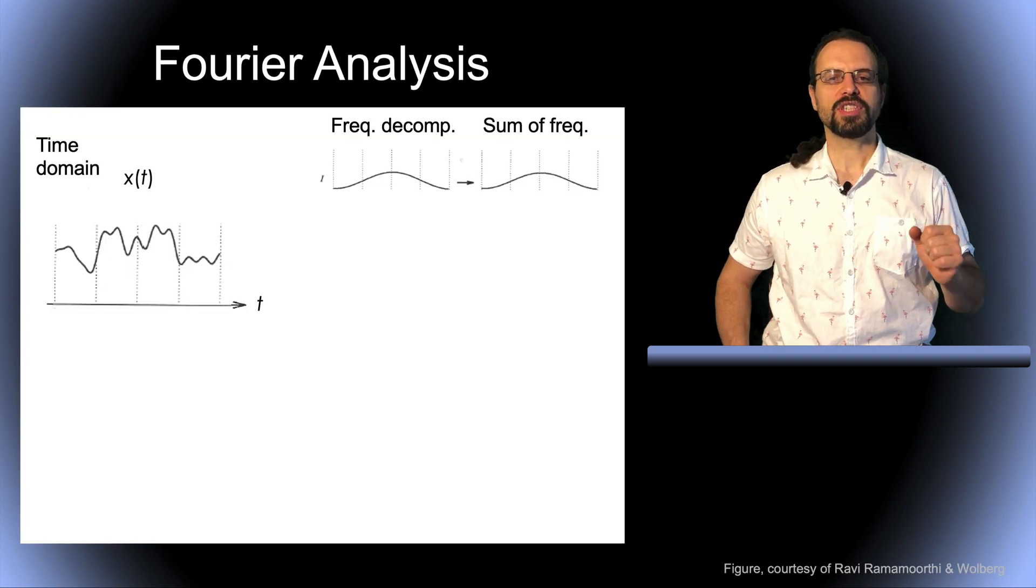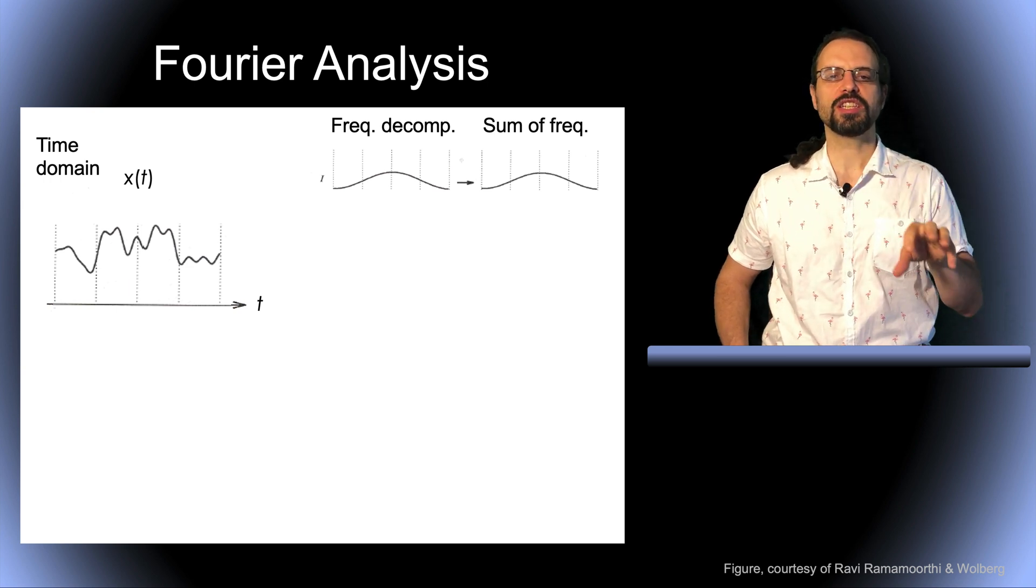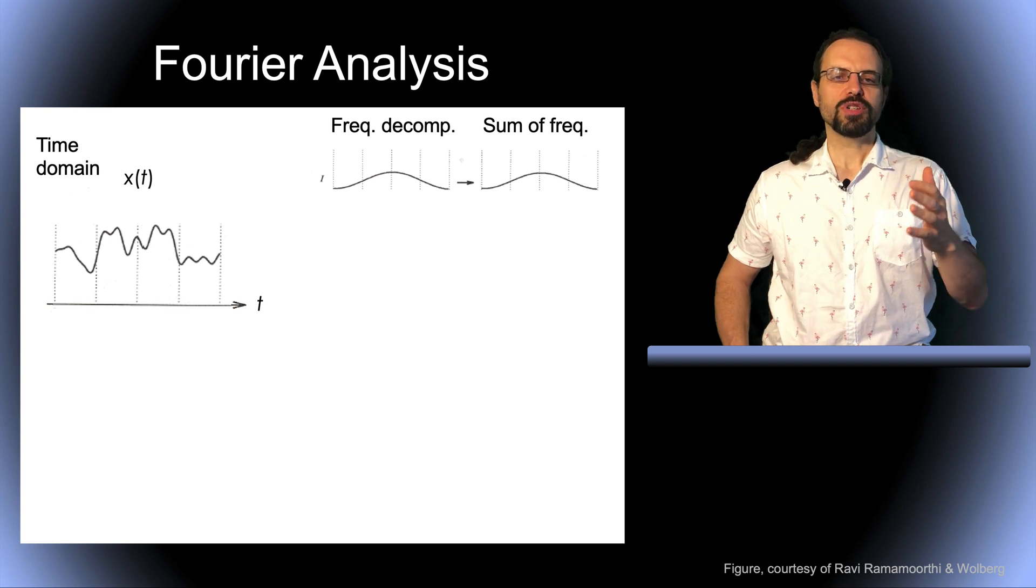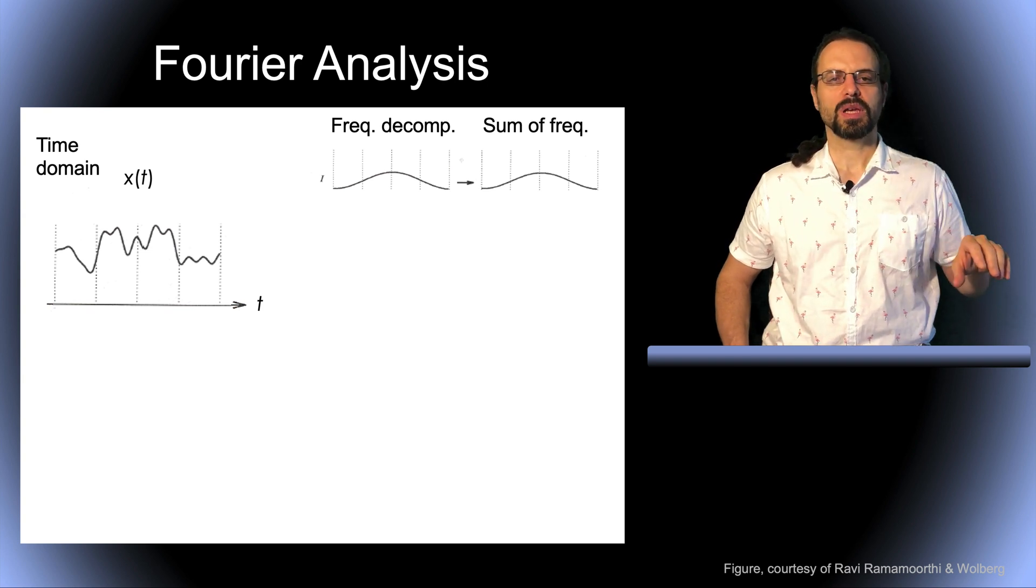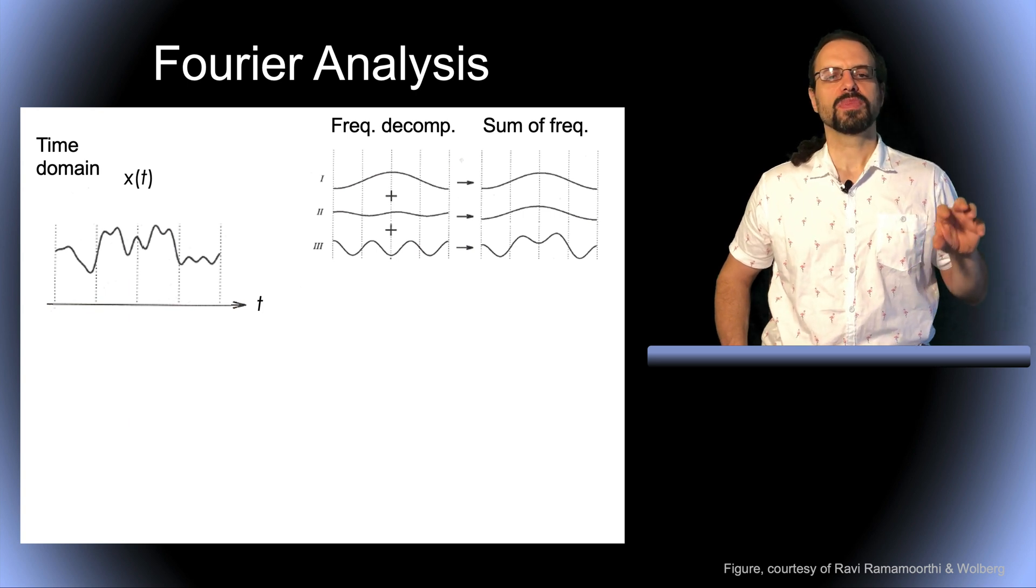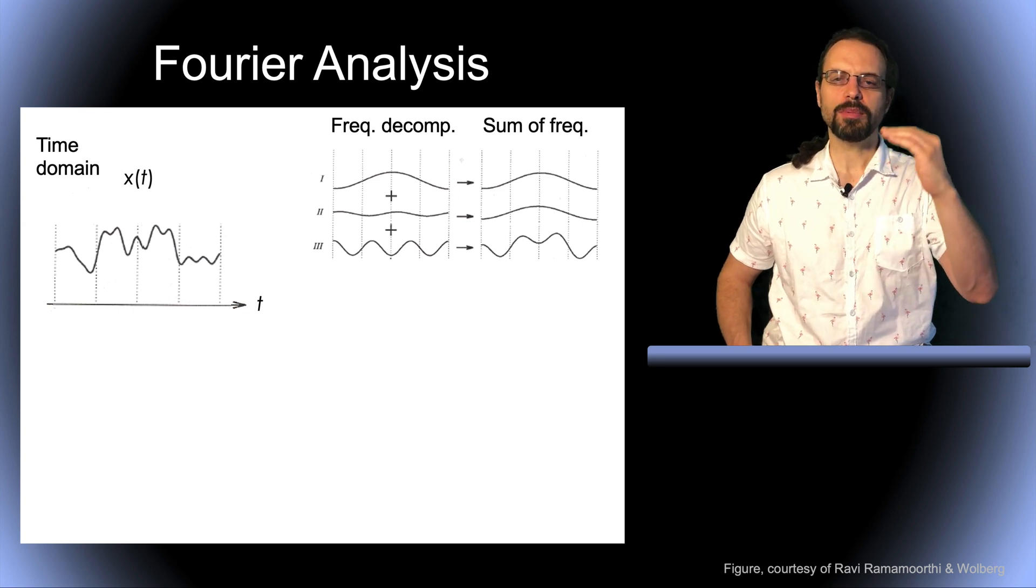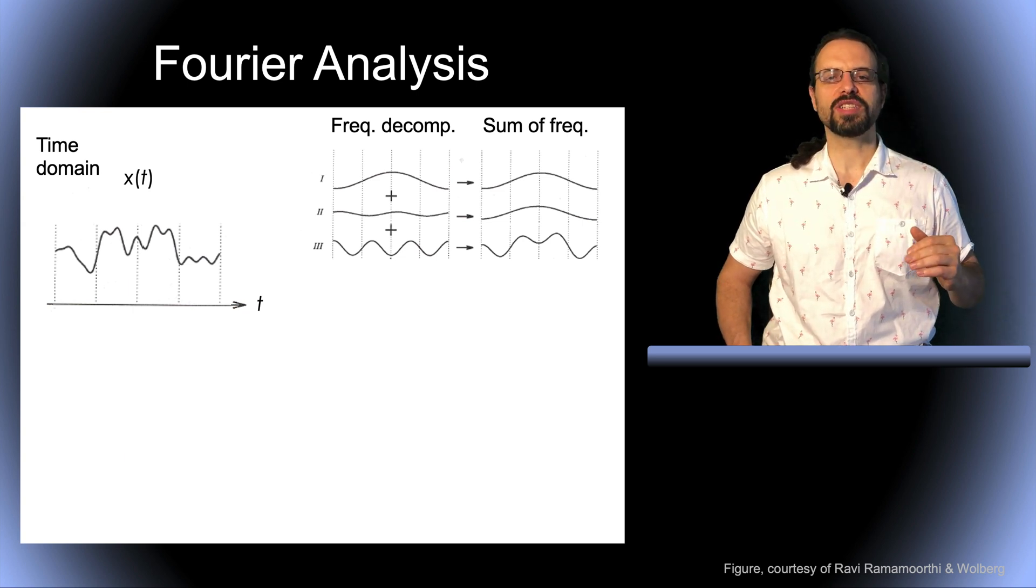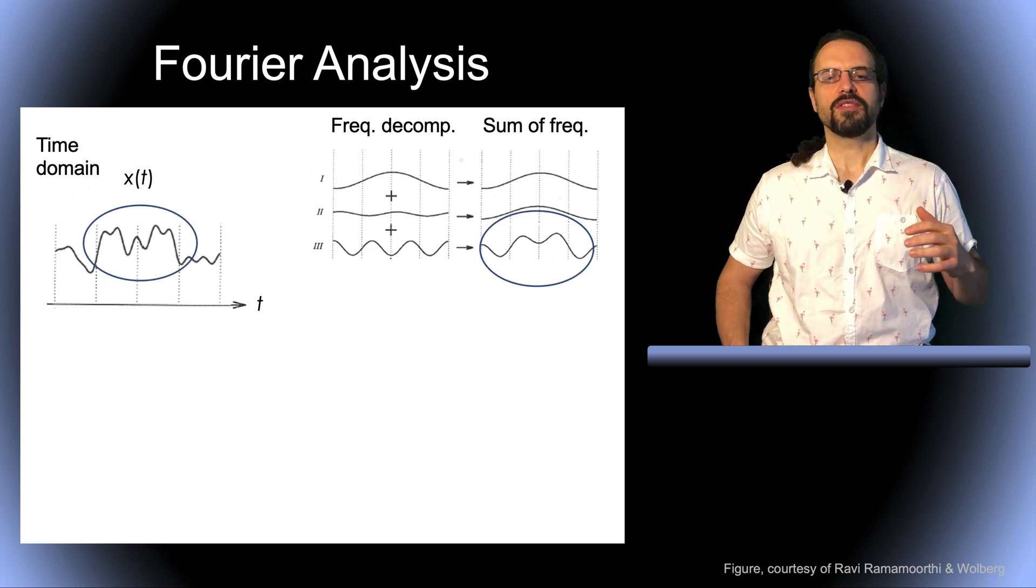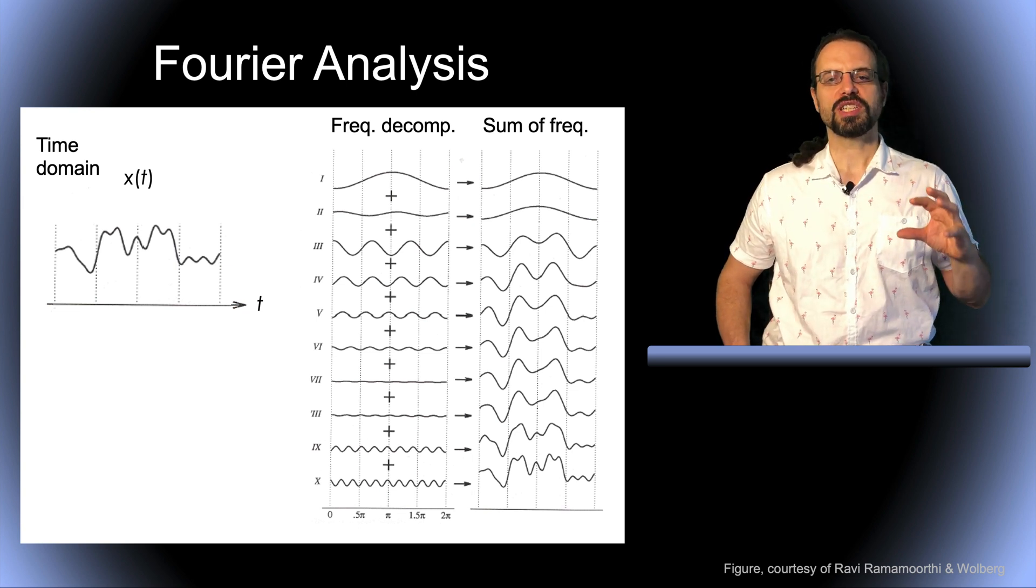So here we have a signal in the time domain on your left and a frequency decomposition of the signal on your right. We only have one frequency here, but we're going to add some more. So now we have three different frequencies with different phases and amplitude. And you can see that as we sum over these frequencies, the original time domain signals start to appear. When we use more frequencies of different phases and amplitude, we can recover at the bottom right the original signal.